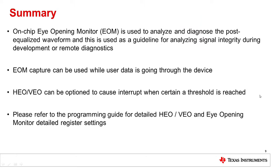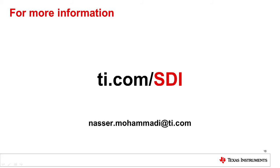In summary, the on-chip eye opening monitor can be used for development and remote field support. Eye opening capture is non-disruptive — it can be captured while user data is going through the device. HEO and VIEW numbers are a numerical representation of the health of the incoming signal and are two registers that can be read easily. These registers can also be configured to cause an interrupt if a certain threshold is reached, making them very convenient for constant signal quality monitoring. Please refer to the programming guide for detailed register settings for HEO, VIEW, and eye opening capture. Thank you very much for watching this video, and please visit TI.com for further documentation.